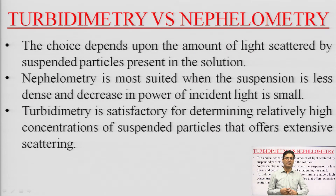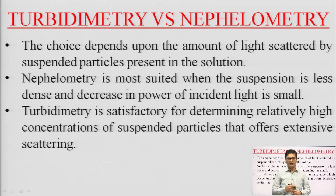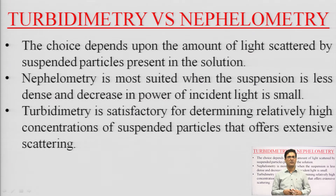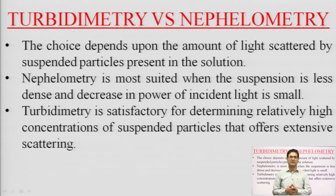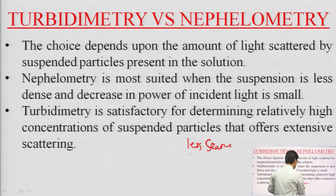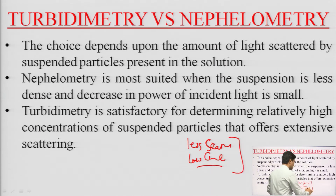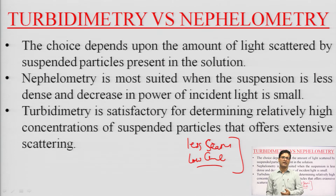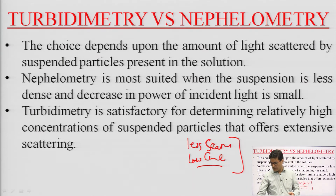The choice between turbidimetry and nephelometry generally depends upon the amount of scattering by the suspended particles. When there is a very large amount of scattering, you should choose the turbidimetric method. Nephelometry is more suited when the suspension is less dense and the decrease in the power of incident light is small — that is, when concentrations are low and suspended particles are at less concentration.